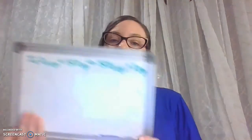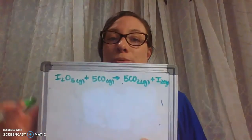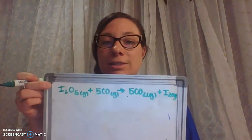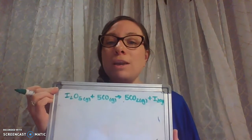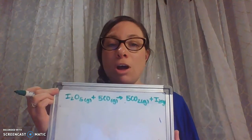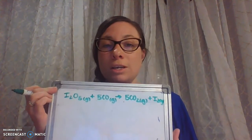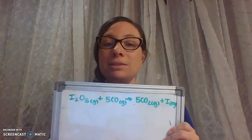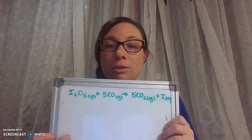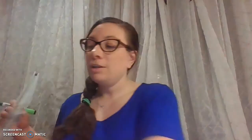Part A of this problem says 80 grams of iodine oxide, which is I₂O₅, the first reactant listed, reacts with 28 grams of carbon monoxide, CO. Determine the mass of iodine which could be produced.